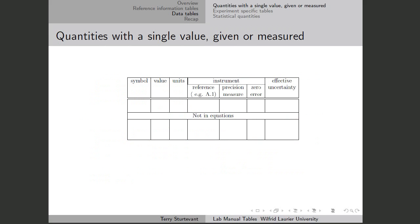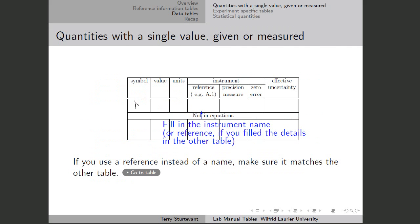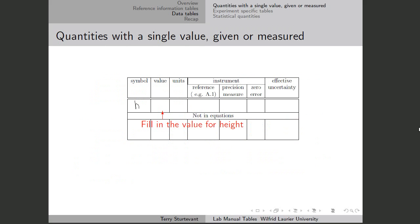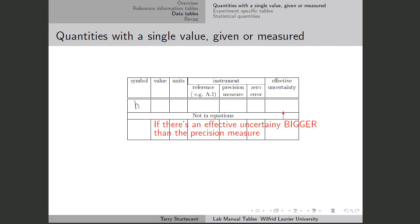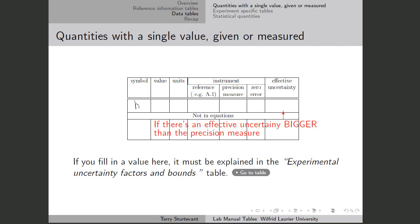Here's what that table looks like. If we measure the height once, then H is the symbol. We fill in the instrument we use — we could say tape measure here, or if we filled the tape measure in the other table, we could fill in the reference, for instance A1. Clicking on this button will take you to that table. Fill in the value for the height and the units, and the precision measure, which will also be recorded in that table if it has been used elsewhere. There's zero error if there is any. And if there's an effect of uncertainty that's bigger than the precision measure, we fill in the value here, and we'll also need an entry in the uncertainty table, so this button will take us there.